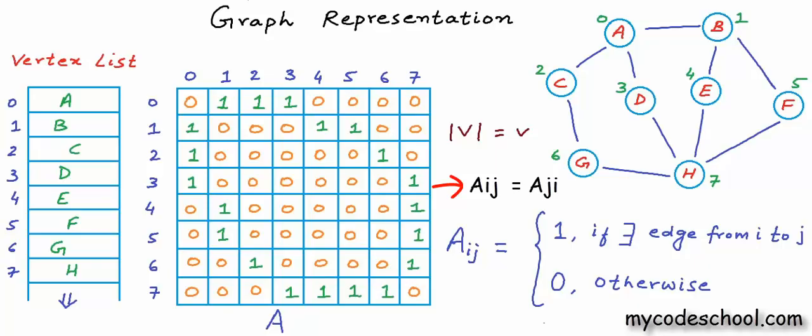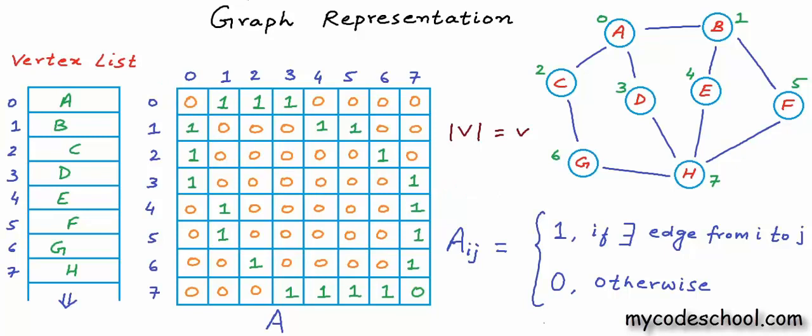We would have two positions filled for each edge, and to see all the edges in the graph we need to go through only one of the two halves. This would not be true for a directed graph — only one position would be filled per edge and we'd have to go through the entire matrix. This kind of representation, where edges are stored in a 2D matrix, is called adjacency matrix representation.